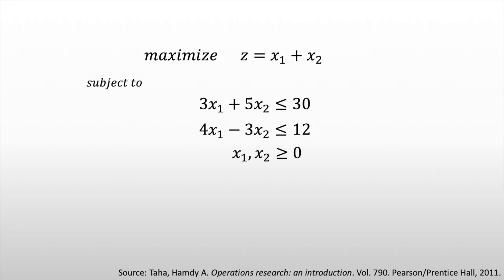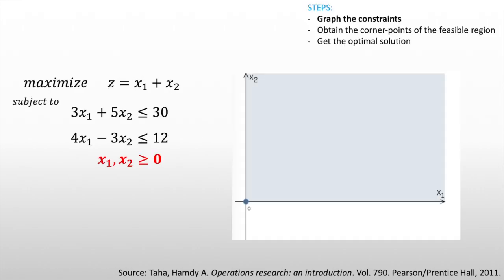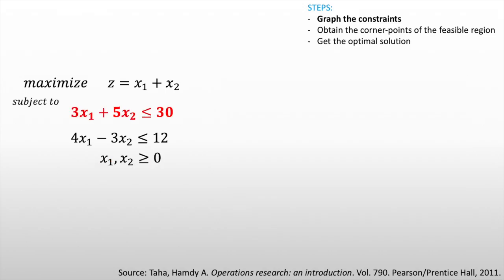So let's try solving this with our graphical method. First, graph the constraints. Given our non-negativity constraints, we are certain that our graph would only lie on the positive-positive plane, which means x1 and x2 would only take positive values. Let's take our first constraint: 3x1 plus 5x2 is less than or equal to 30. We transform this to an equality: 3x1 plus 5x2 is equal to 30.